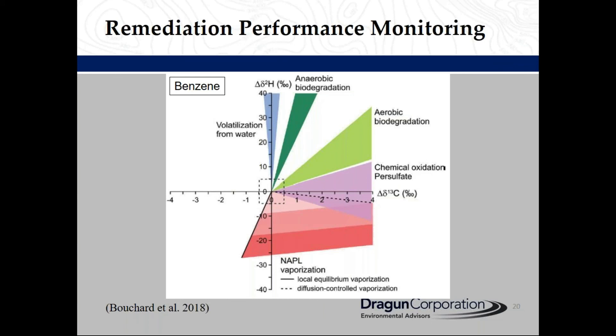This last plot is from a paper by Butcher and others. They prepared this plot to illustrate the expected carbon and hydrogen isotope trends for benzene during biodegradation, chemical oxidation, and physical removal processes. This plot helps to evaluate the performance of the remediation system. For example, if we have a persulfate injection at a site impacted with petroleum hydrocarbons and our isotope data falls in the corresponding area, it means the injection is performing as planned. Basically, we can use CSIA to understand the fate of contaminants in the subsurface.